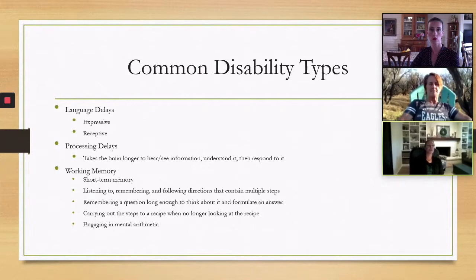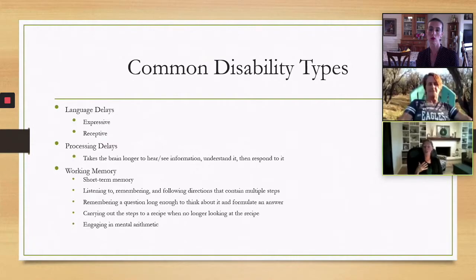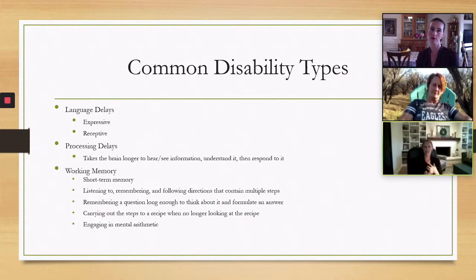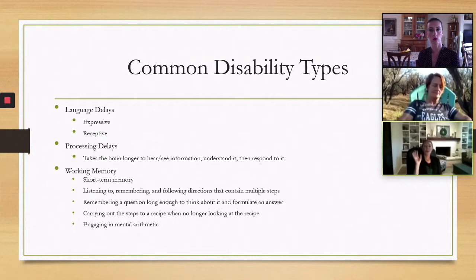Language delays include expressive and receptive types. Receptive is basically receiving input auditorily — what I'm hearing and how it gets interpreted into understanding. Expressive means I can completely understand what you're saying but I'm having a hard time getting out the language to express what I'm thinking. Students with expressive delays often do well when you give them questions in advance so they can think through answers and actually participate in a dynamic group discussion rather than sitting quietly the whole time.